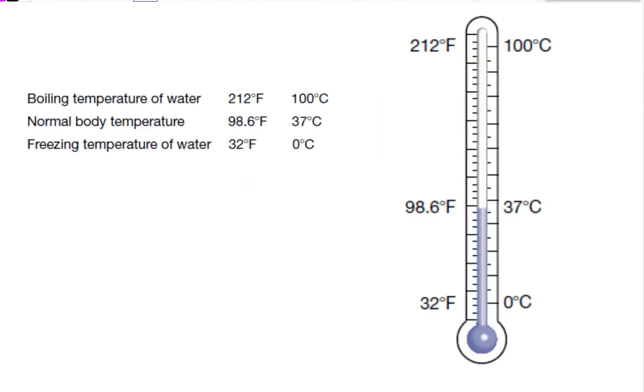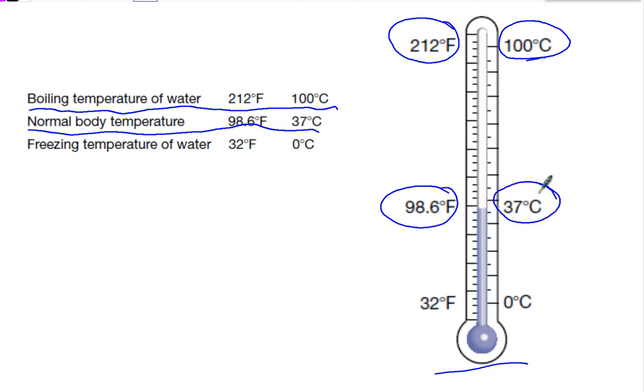Now the next thing we can often see is scales. So scales is a way to show numerical information. A mark on a scale can show a certain measure. So in this case, we have thermometers. And thermometers have special points on them. The boiling temperature of water is 212 degrees Fahrenheit or 100 degrees Celsius. Normal body temperature is about 98.6 Fahrenheit or 37 degrees Celsius. And freezing temperature of water is 32 degrees Fahrenheit or 0 degrees Celsius.